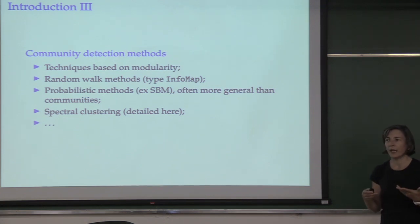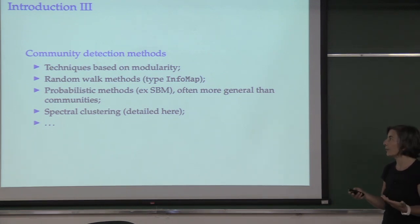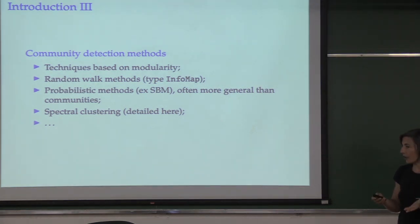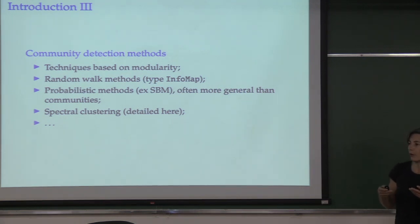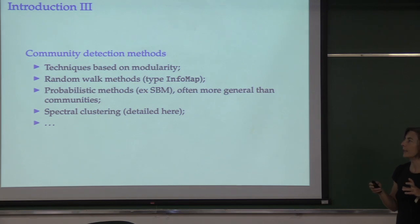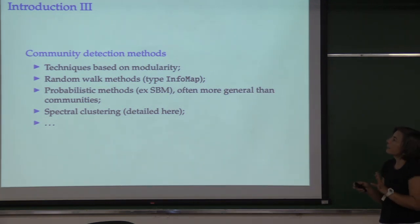The Louvain algorithm is a fast way to maximize the modularity of a graph, finding a partition of the nodes into communities. It's quite fast and works on very large networks — those are its advantages. One disadvantage is that it's quite unstable: if you run it several times you will find different partitions, likely with almost the same modularity value. So it has some drawbacks.